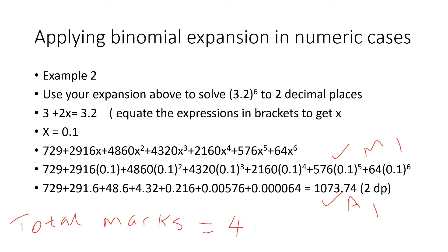The next part is applying binomial expansion in numerical cases, whereby now you have been told in this example, use your expansion above, the one we have looked at, to solve (3.2)^6 to two decimal places. Here you have to be very keen. This is where the examiner gives you the specific instructions: two decimal places, four significant figures, three decimal places. So you have to make sure that your answer is following those instructions. So what you do here, you take the expression that was in brackets, that is 3+2x, and equate it to what is in brackets now, that is 3.2.